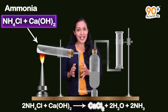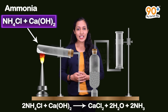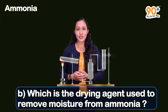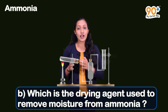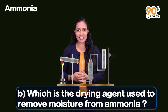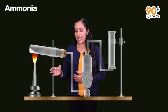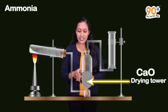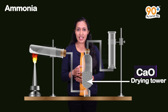Ammonium chloride and calcium hydroxide are the chemicals used to prepare ammonia. Now let us look at the B question: which is the drying agent used to remove moisture from ammonia? To remove the moisture present in ammonia, we pass the formed ammonia through a drying tower filled with calcium oxide. So the drying agent used here is calcium oxide.